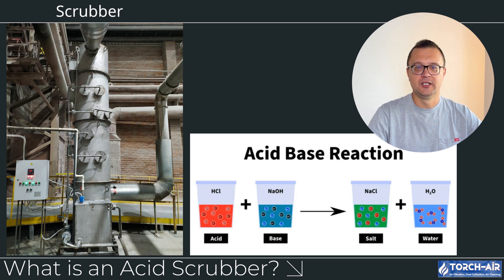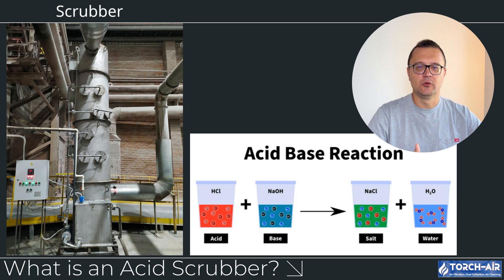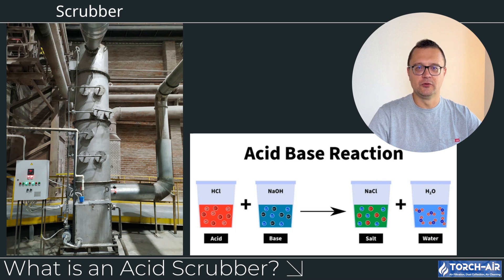Hey everyone, Michael Klepik here, and today we're diving into the world of acid scrubbers. If you work in industries that deal with acidic gases like hydrochloric acid (HCl), sulfur dioxide (SO2), or hydrofluoric acid (HF), then an acid scrubber is the key to keeping your operations safe and compliant with environmental regulations. These systems are critical for neutralizing hazardous gases before they're released into the atmosphere. Let's break down what acid scrubbers are, how they work, and the different types available for your specific needs. Let's get started.